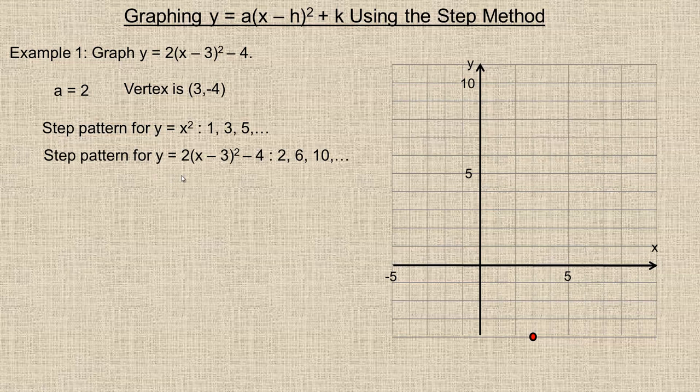So the step pattern for this will be, I multiply this by 2, so that's 2, 2 times 3 is 6, 2 times 5 is 10, the next number 7, double that would be 14, and of course those steps start to get pretty big, so you'd need a pretty big grid to draw them. Now, what the 2 and 6 and 10 mean is starting with the vertex, the 2 means I go out 1 and up 2 on either side.